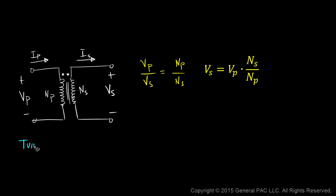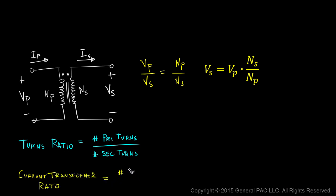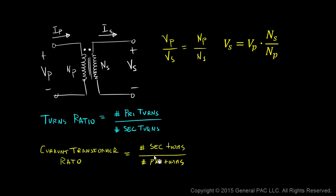The turns ratio in a transformer is defined as the number of primary turns divided by the number of secondary turns. But when talking about a current transformer, the CT ratio is a little bit different — it equals the number of secondary turns divided by the number of primary turns, which is essentially flipped. Why is it flipped? Let's try to understand this intuitively.